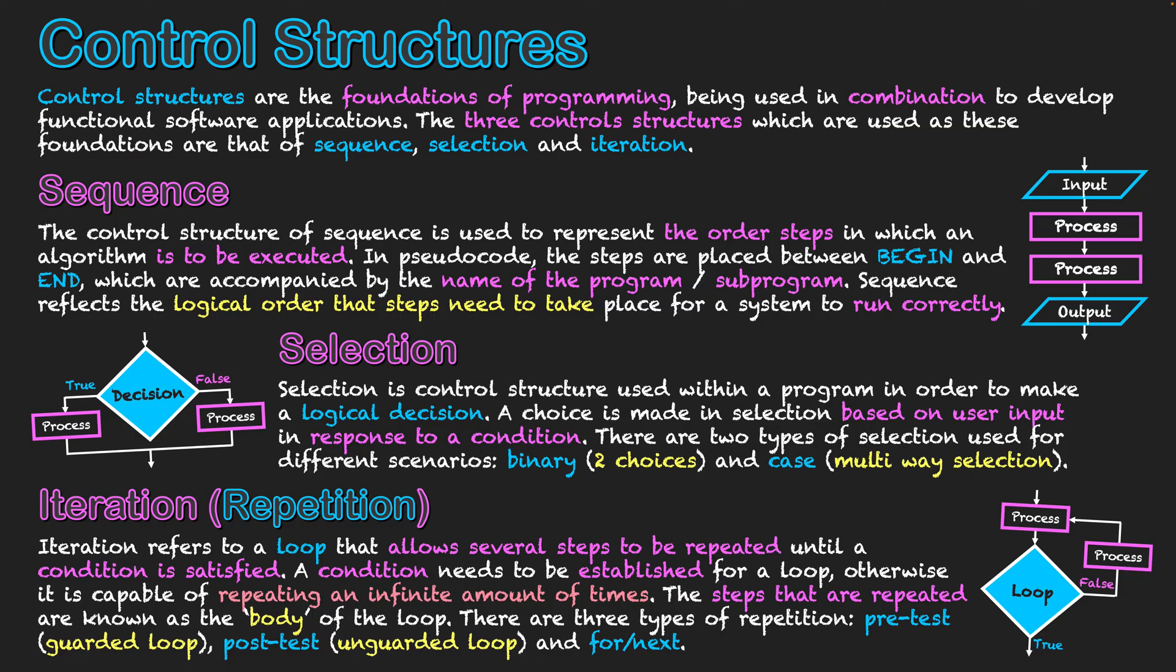And then the final one is a for-next loop, where there are specified amounts or criteria related to how many times the loop will take place, and some sort of formula is established there in that case. But basically, that's repetition. We're going to be repeating steps in this case and repeating them until the condition is satisfied.